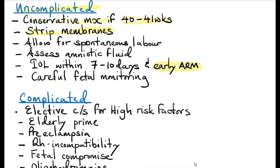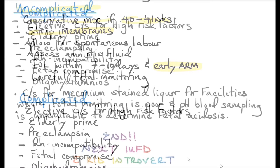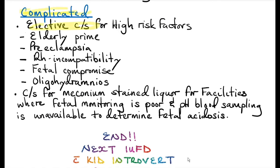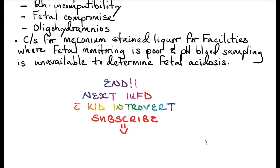If the pregnancy is already at 42 weeks gestational age, admit for induction of labor. For a complicated post-term pregnancy, plan for an elective cesarean section if the patient is an elderly primigravida, has preeclampsia or rhesus incompatibility, and there is fetal compromise or oligohydramnios. If you are inducing for vaginal delivery and find meconium-stained liquor, it is best to proceed to cesarean section, as this could indicate the fetus has had a hypoxic episode. Continuing labor would stress the fetus, resulting in fetal distress or stillbirth. Cesarean section should be done in facilities where fetal monitoring is poor and fetal blood pH sampling is unavailable to determine fetal acidosis.